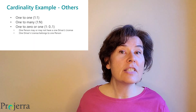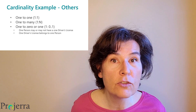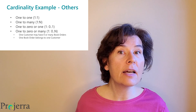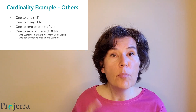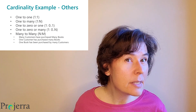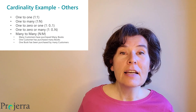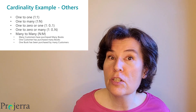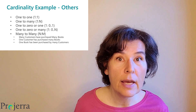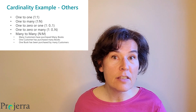Now for some variation. A relationship may be described as one-to-zero or one. For example, a person may or may not have one driver's license, but one driver's license always belongs to one person. A second variation is described as one-to-zero or many. For example, a customer may have zero or many book orders, but one book order belongs to only one customer. And yet there is another variation — many-to-many, perhaps the most complex relationship to model. Consider that many customers have purchased many books, which can be decomposed to: one customer has purchased many books, and one book has been purchased by many customers.